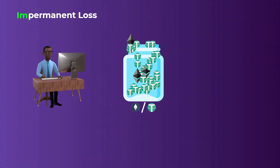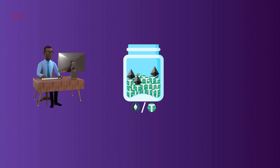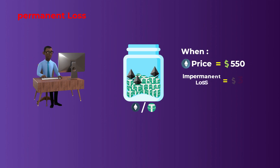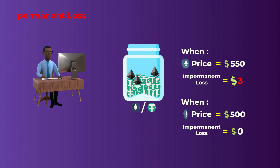It is called impermanent loss because you don't actually take the loss until you cash out your tokens from the pool — that is when it becomes a permanent loss. For example, if you didn't withdraw and waited until the price of Ethereum falls again close to the price you deposited at, the impermanent loss will be much lower, or it can disappear completely if you cash out when the price of Ethereum is at exactly $500.